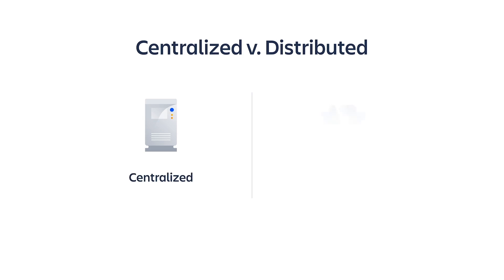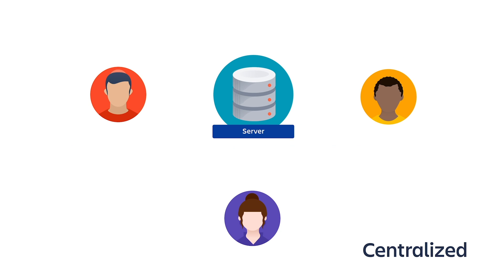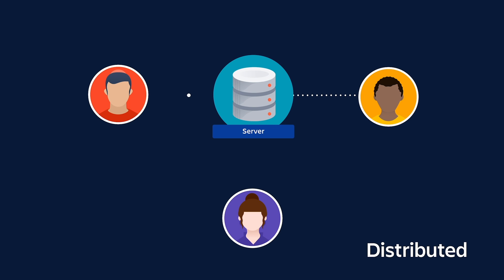There are two main categories of version control systems: centralized, or CVCS, and distributed, or DVCS. With a centralized system, the entire project is stored on a central server and each person sends their changes to the central copy of the project. CVS and Subversion are two well-known centralized systems. With a distributed system, the entire project and all of its history is mirrored on everyone's computer. Some examples of distributed systems are Git and Mercurial.